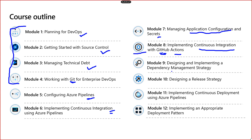On the third day, we'll talk about release strategy — how you can design your application to deploy into different environments. That is called releasing to environments. We'll talk about how to implement continuous deployment using the pipeline, and there are different deployment patterns like blue-green deployment. We'll cover those deployment patterns when we discuss release strategy.